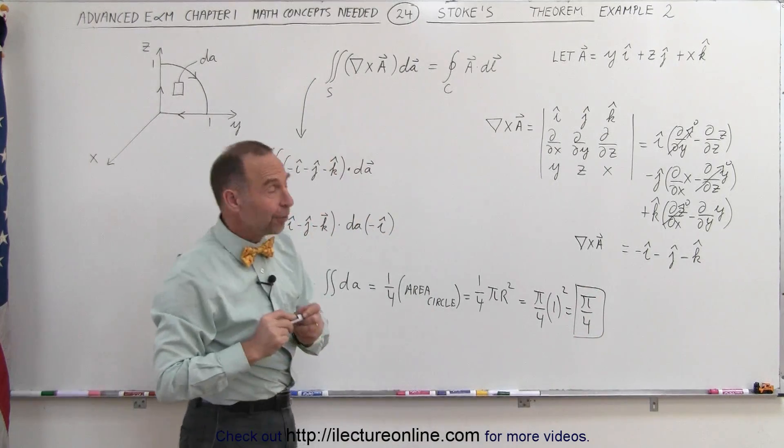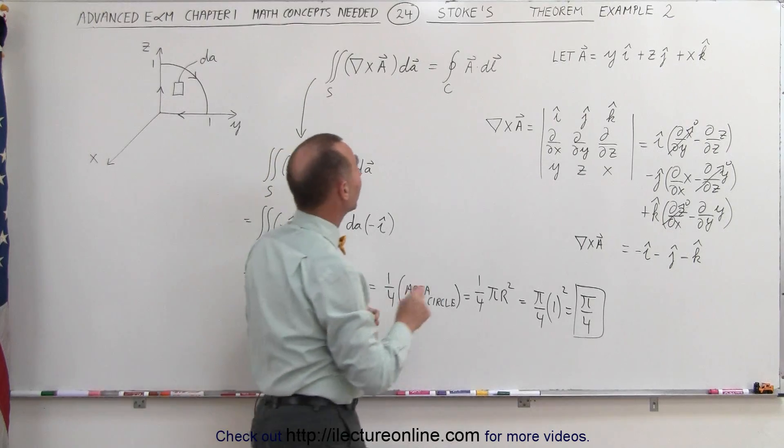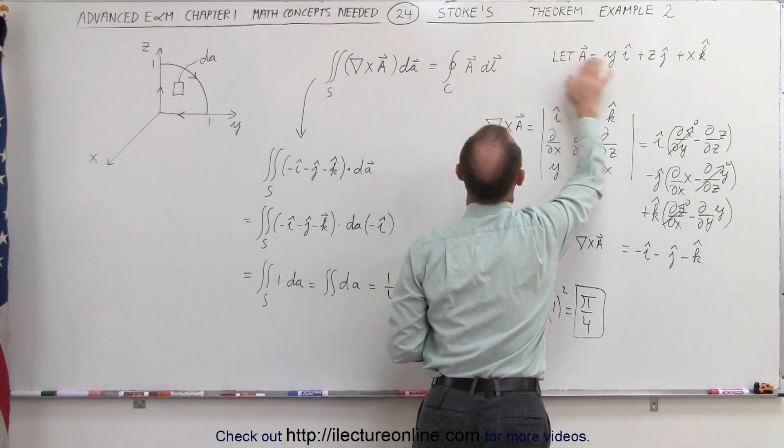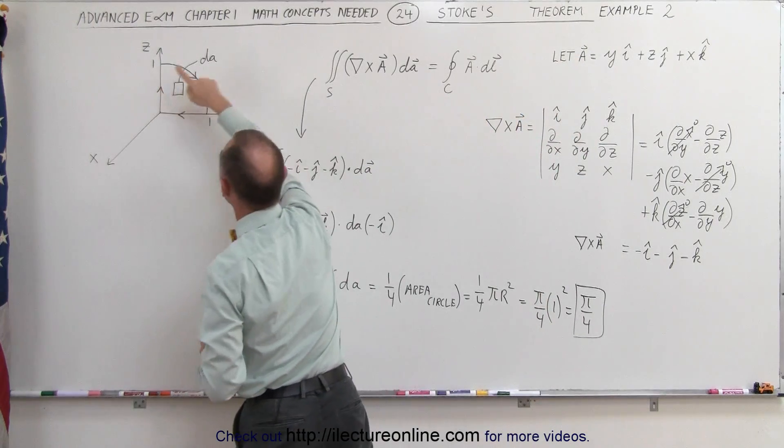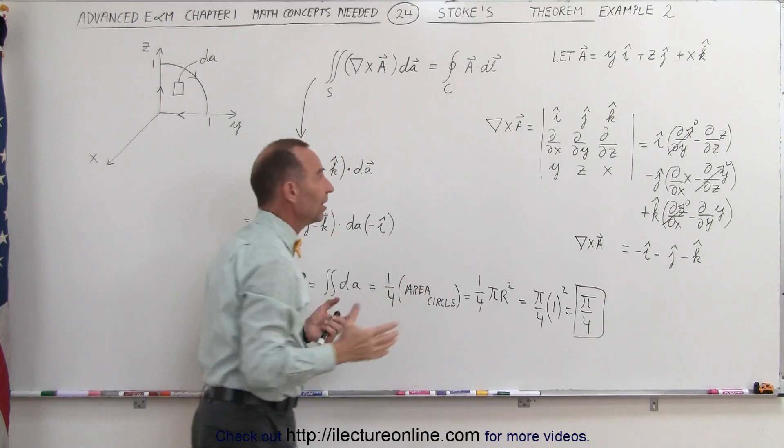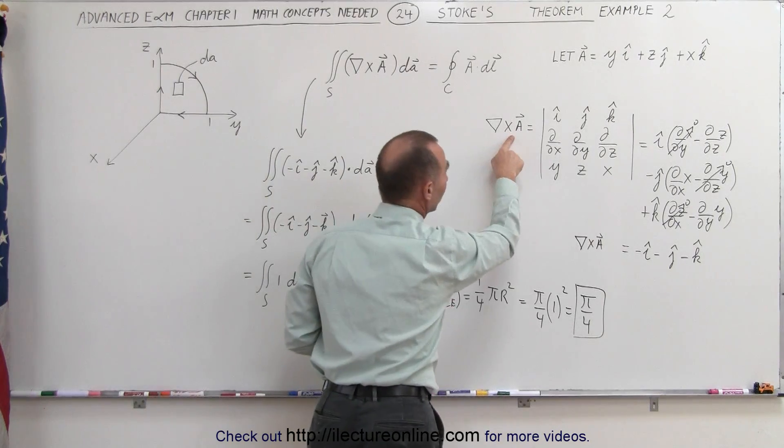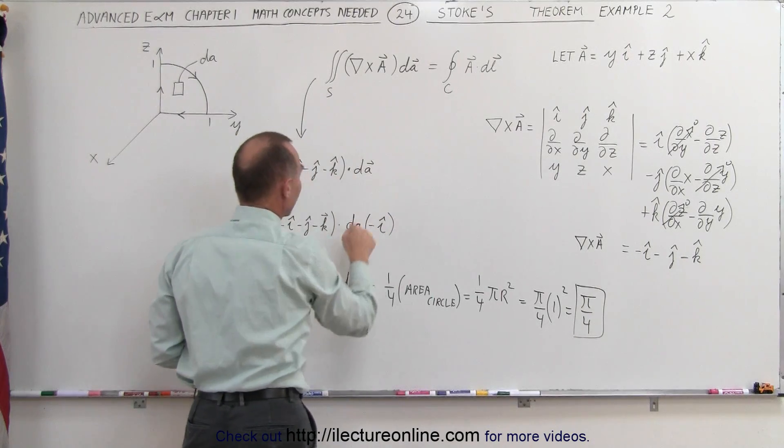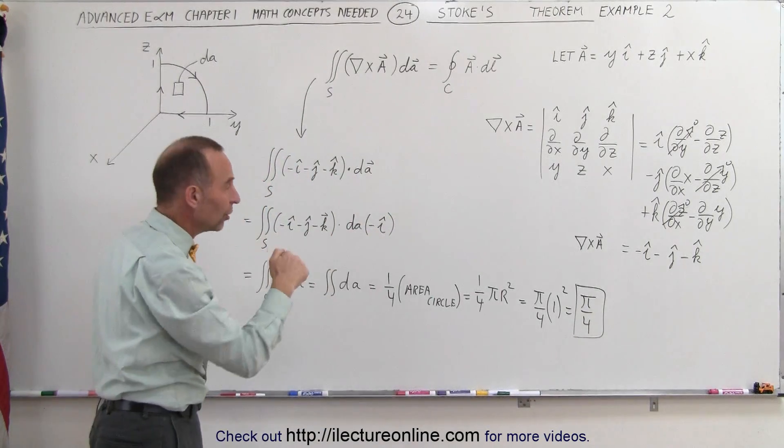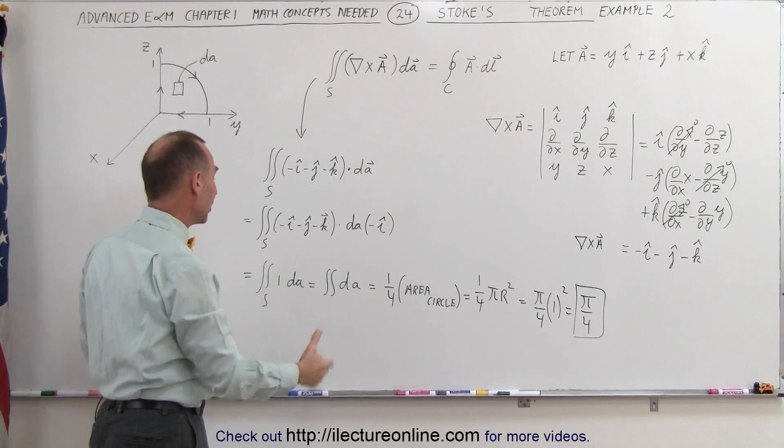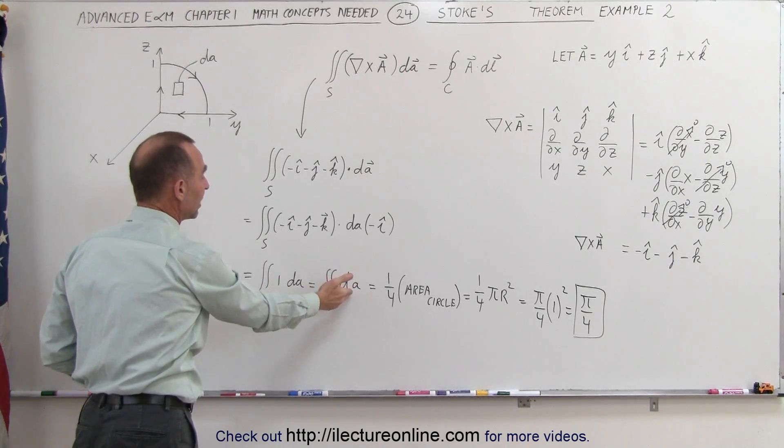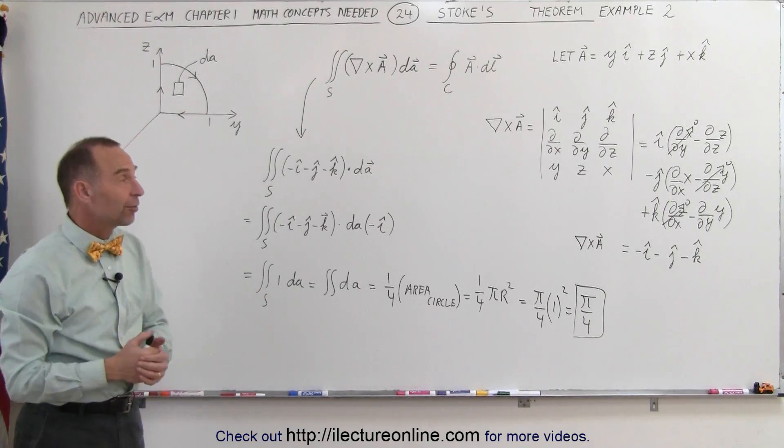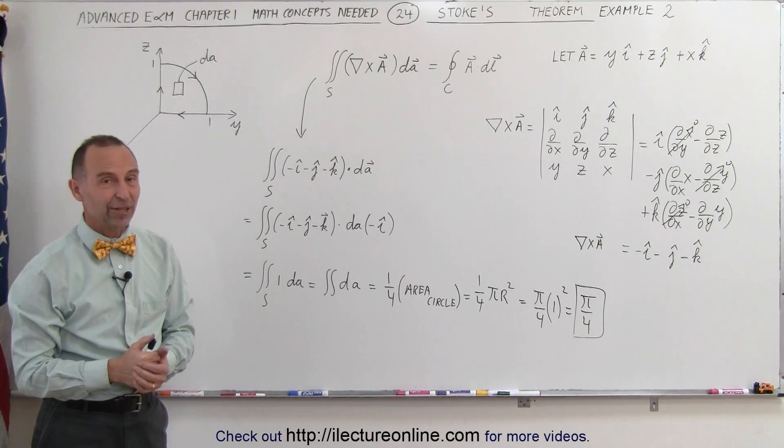Again, Stokes' law comes to the rescue. If we had to integrate the right side of the equation, that would be very difficult, taking A dot dL and integrate it along that curve. You can see that by using Stokes' law, finding the curl of A, which is fairly simplistic, then multiplying times dA, which is dA times the unit vector, in this case, into the negative x direction. That way, there's only one term that survives. It's simply an integral of dA, which is the area of that. As you can see, Stokes' law sometimes can make things a lot easier for you, and that's how it's done.